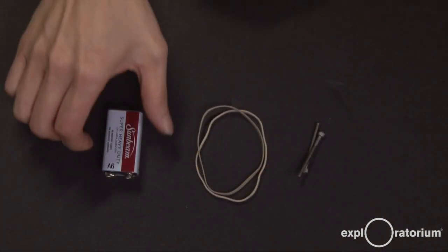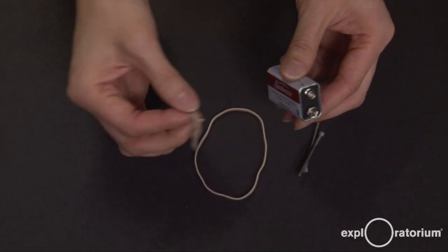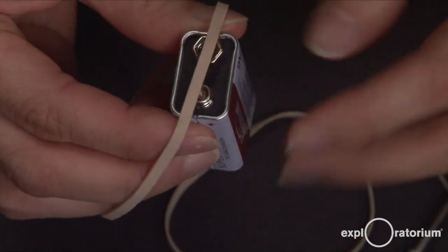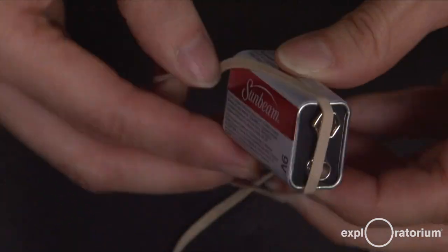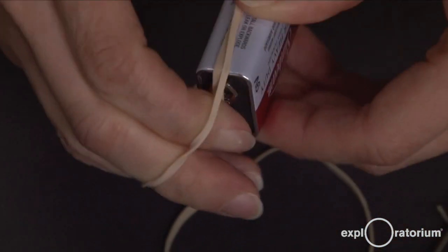The device is incredibly simple to make. You take your 9-volt battery and wrap one of the rubber bands across the terminals. I'm going to wrap this around twice so that it stays put.